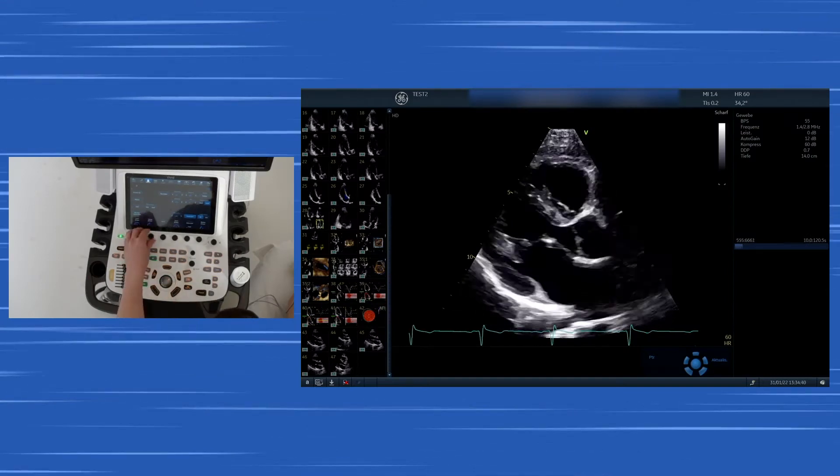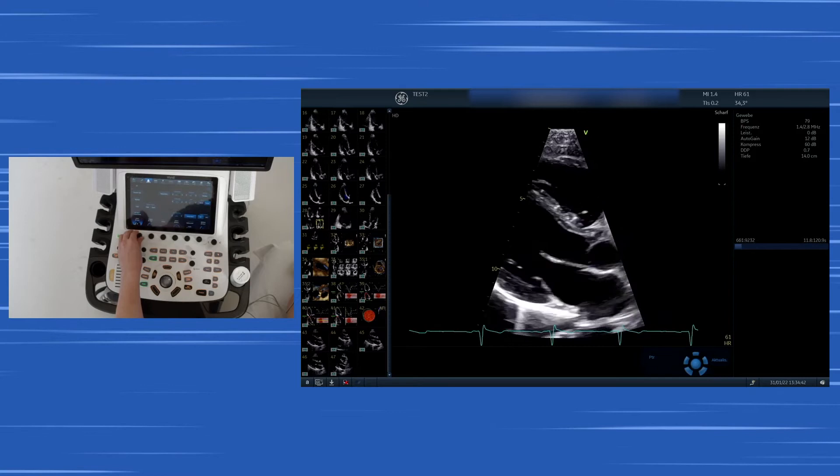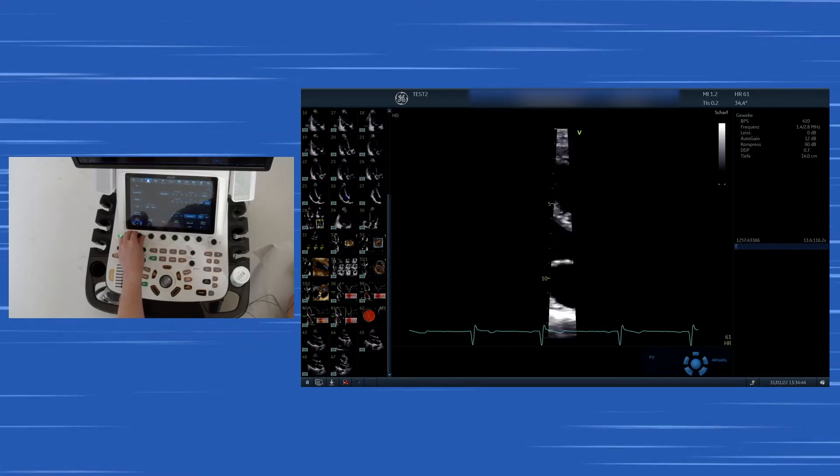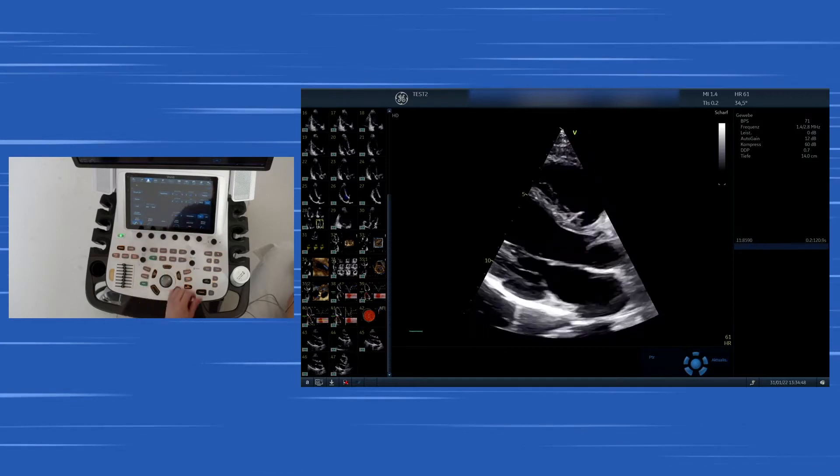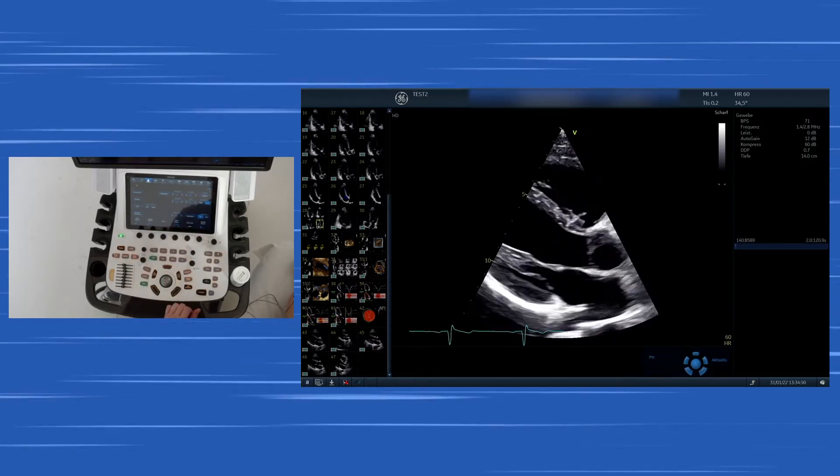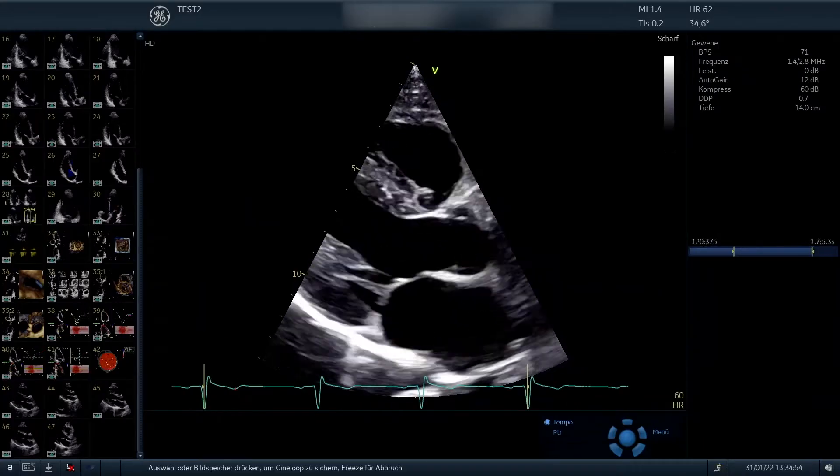As seen in this example you can make the sector very narrow which results in a very good frame rate, but it's not always optimal, so you should have the sector so that you see the entire anatomy you want to see.